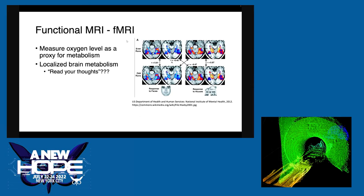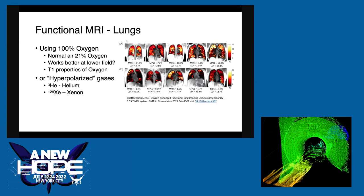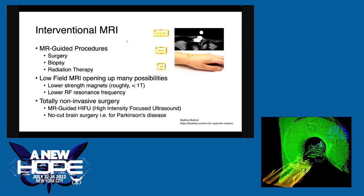fMRI is kind of interesting — they use oxygen level as a property for metabolism. Are they reading your thoughts? There's a lot of research on that right now. They can also do functional MRI of other body parts like the lungs using different concentrations of oxygen. On top is healthy lungs with pretty even oxygen perfusion, and on the bottom are people with diseased lungs — you can see the difference. Interventional MRI is any procedure guided by MRI, such as a biopsy, surgery, or radiation therapy guidance to avoid damaging nearby tissues.